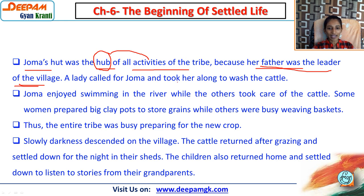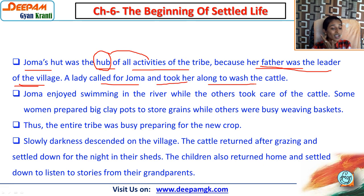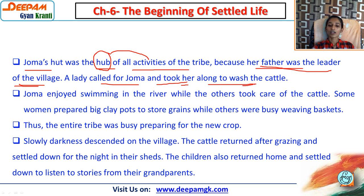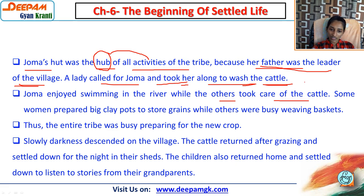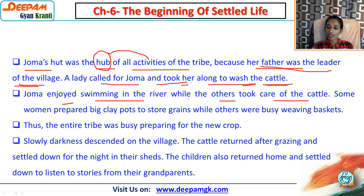A lady called for Joma and took her along to wash the cattle. They took the animals to the river to wash them. Cattle means domesticated animals. Joma enjoyed swimming in the river while the others took care of the cattle - as she was the daughter of the leader, she didn't have to do that work.